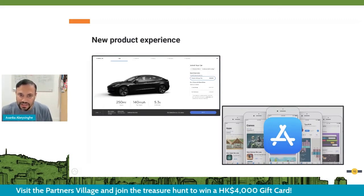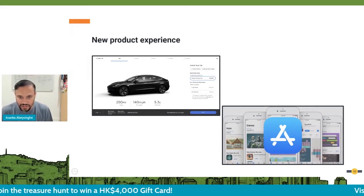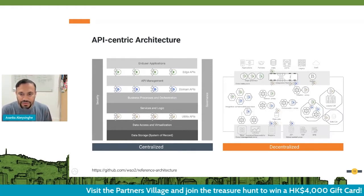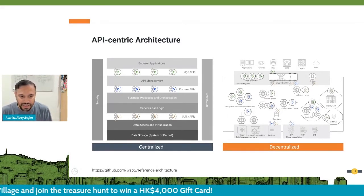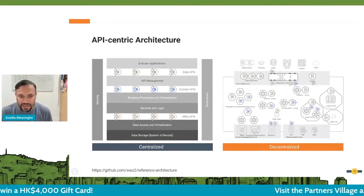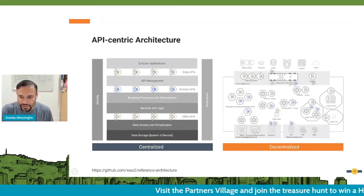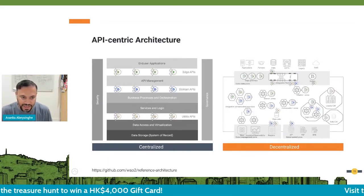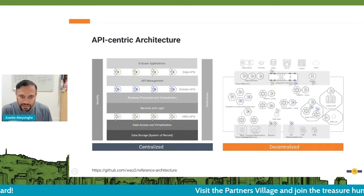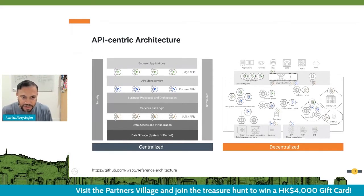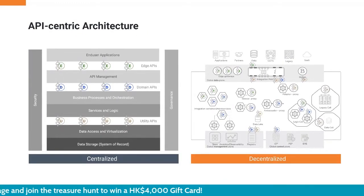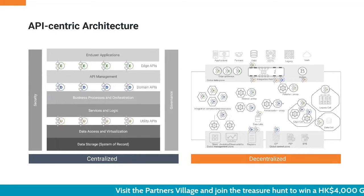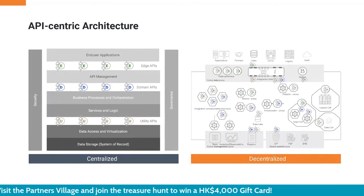If you look at the architecture used to build these applications, we can identify two sets: layered and centralized architecture as seen on the left-hand side, and the decentralized architecture with microservices and cloud-native concepts. Even in the centralized layered architecture, APIs are used to connect different layers. I have identified three types of APIs: experience APIs, domain APIs, and utility APIs — exposed in different layers — and you build end-user applications on top of that.